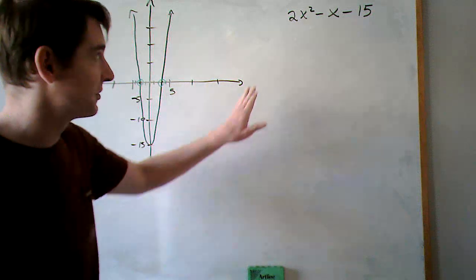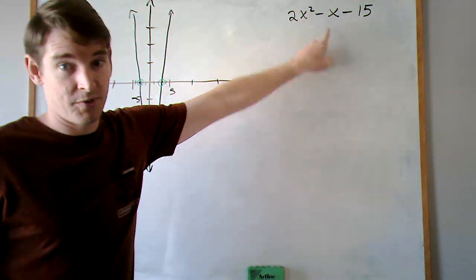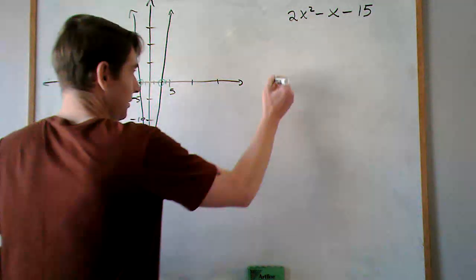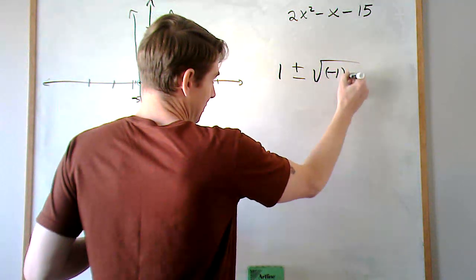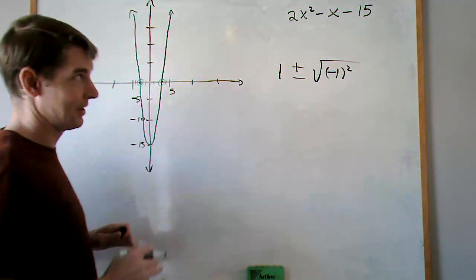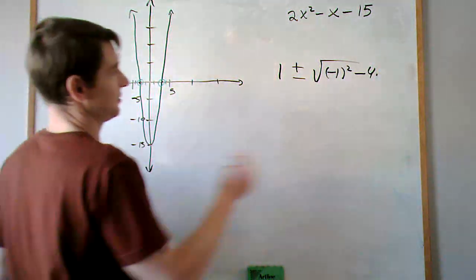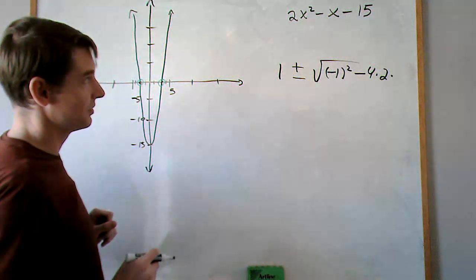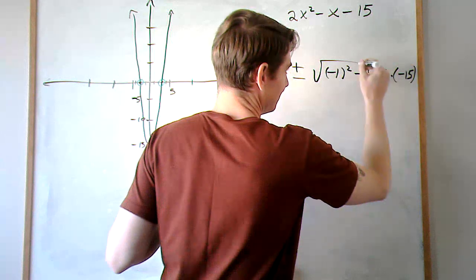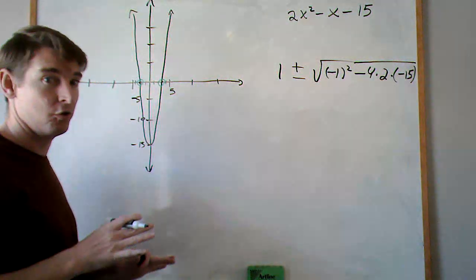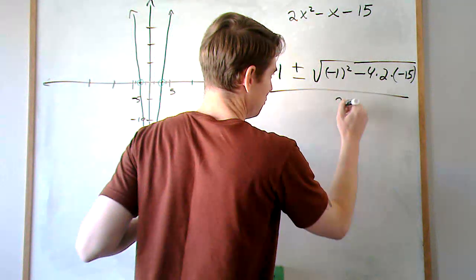Quadratic equation: we've got the opposite of b. b is negative 1, so the opposite of negative 1 is positive 1. We get 1 plus or minus the square root of b squared — negative 1 squared — minus 4ac. So we have minus 4 times a, which is 2, times c, which is negative 15. We're going to take this all over 2a, and a is 2, so 2 times 2.